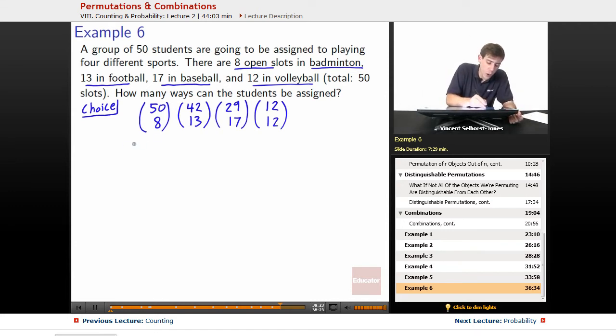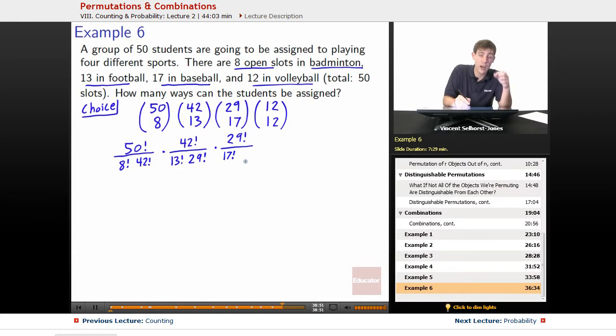And we work this out with what these mean mathematically. 50 choose 8 is 50 factorial over 8 factorial times 42 factorial. Next, times 42 factorial divided by 13 factorial times 29 factorial. Next one is times 29 factorial divided by 17 factorial times 12 factorial, times 12 factorial divided by 12 factorial times 0 factorial.